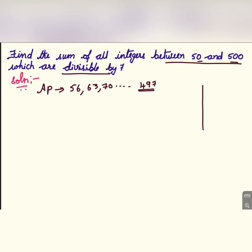Now in this AP, a is equal to 56, d is equal to 63 minus 56 which is 7. Already they have given that it is divisible by 7, hence the difference or common difference should be equal to 7.